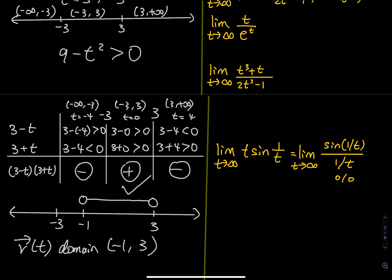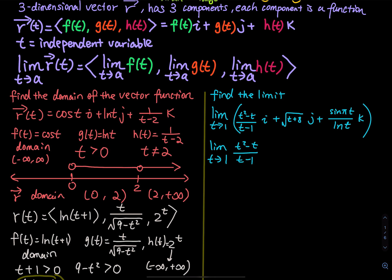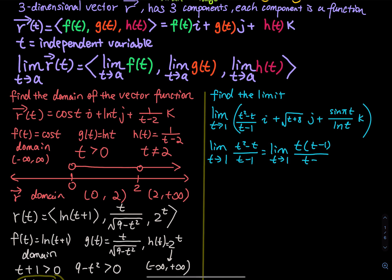Now let's solve the next type of problem: finding the limit. We have a vector function with components i, j, and k, and we take the limit as t approaches 1. For the first component, limit as t→1 of (t² − t)/(t − 1): factor out t from the numerator to get t(t−1)/(t−1), cancel the (t−1), and plug in t = 1 to get 1.